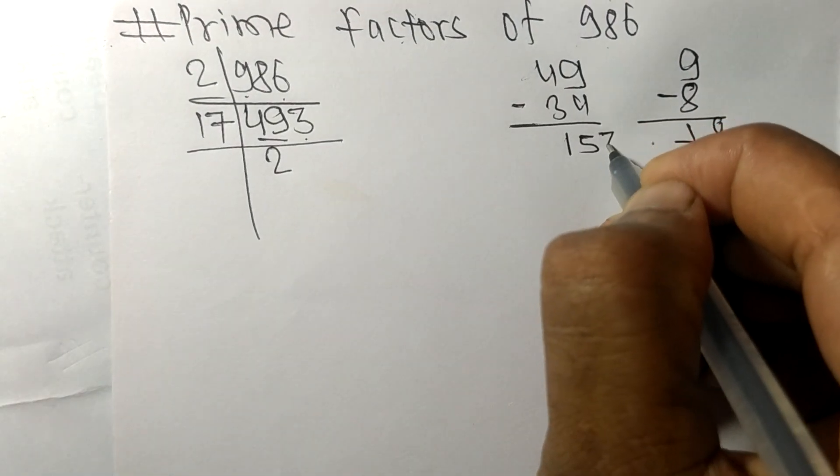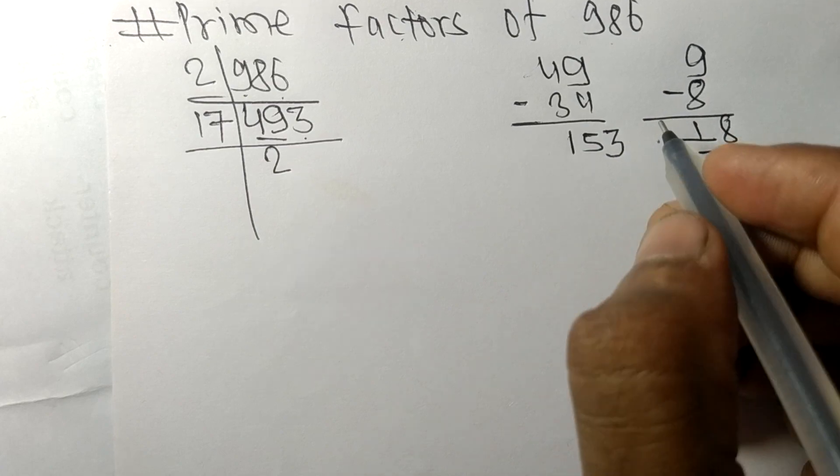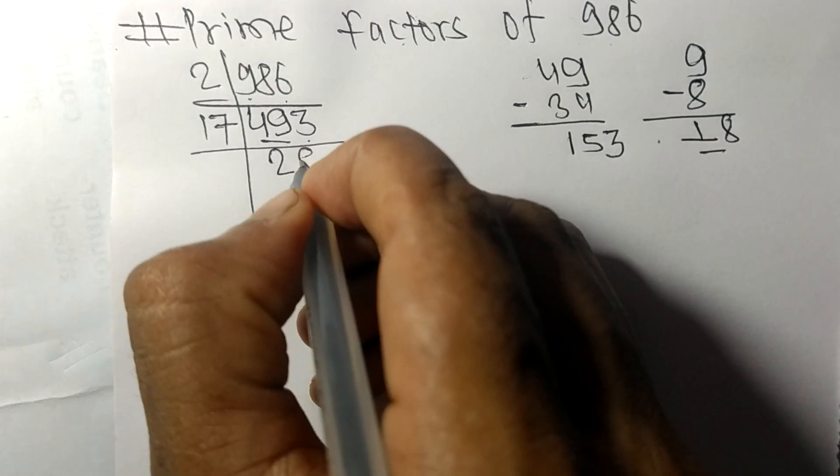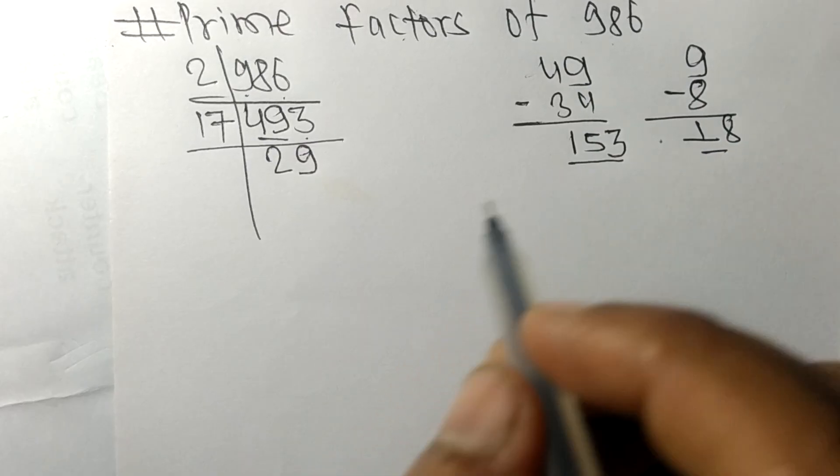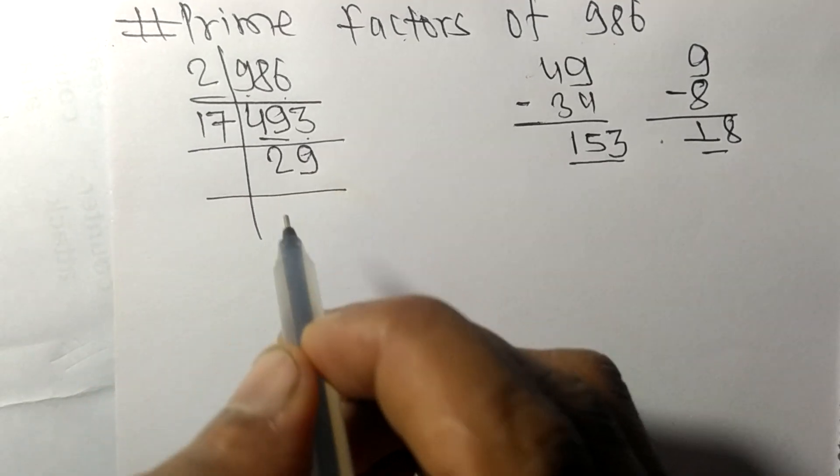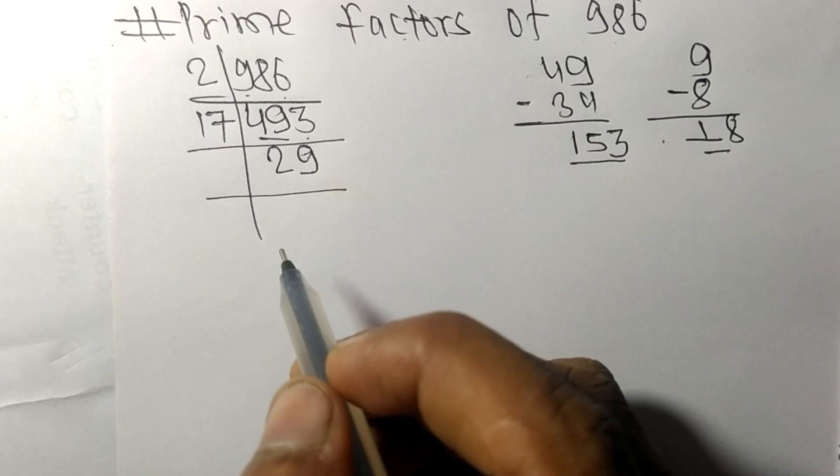Bringing down 3, it becomes 153. 17 times 9 equals 153. Now we have 29, which is a prime number.